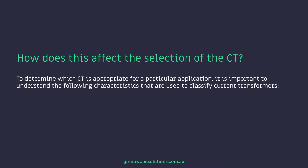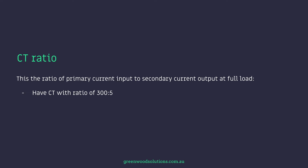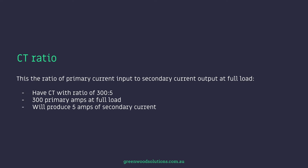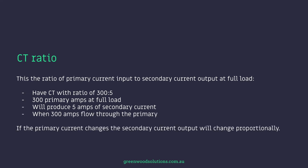To determine which CT is appropriate for a particular application, it's important to understand the following characteristics used to classify current transformers: the ratio, the polarity, and the accuracy classification. The CT ratio is the ratio of primary current input to secondary current output at full load. For example, a CT with a ratio of 300 to 5 means 300 primary amps at full load will produce 5 amps of secondary current. If the primary current changes, the secondary current output will change proportionately.